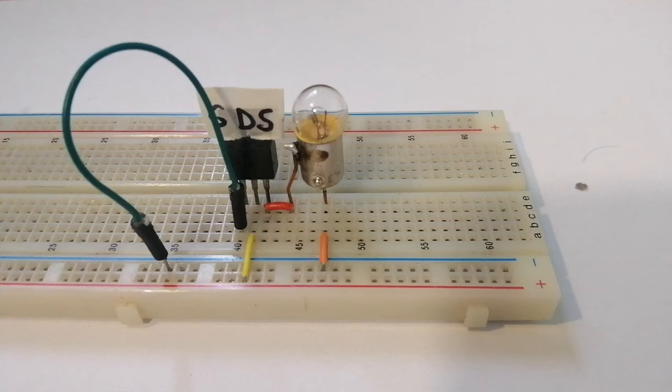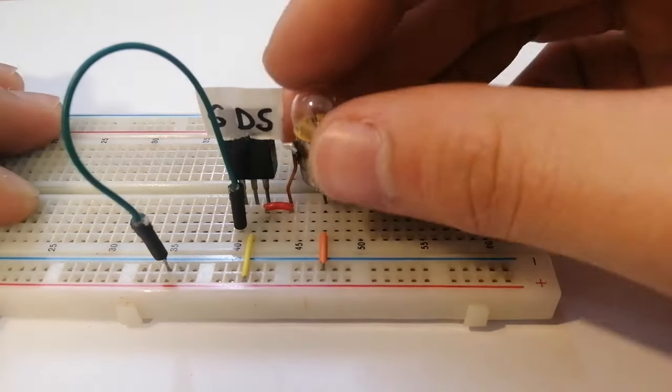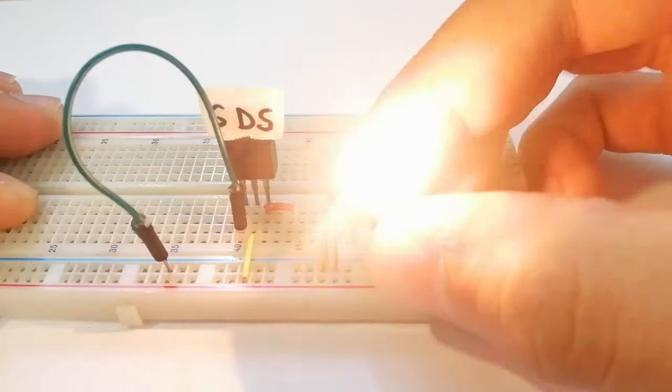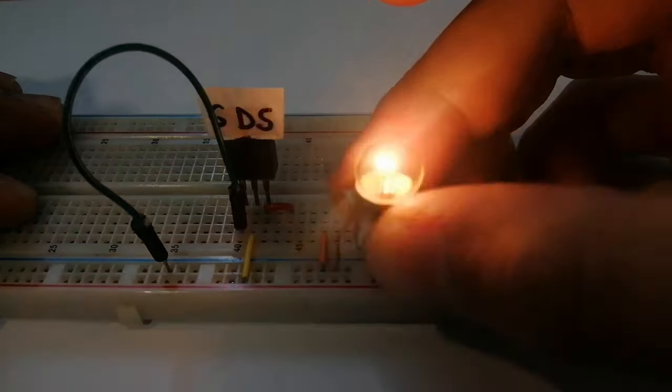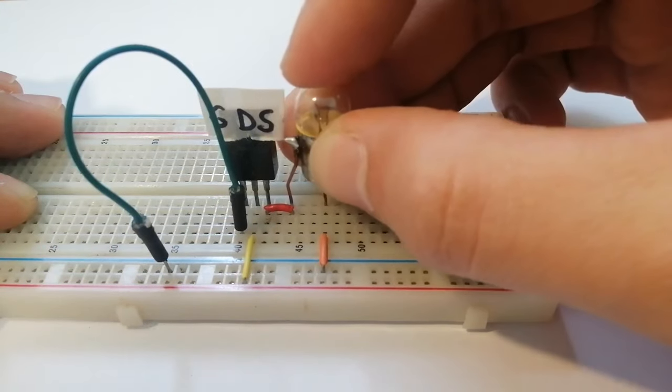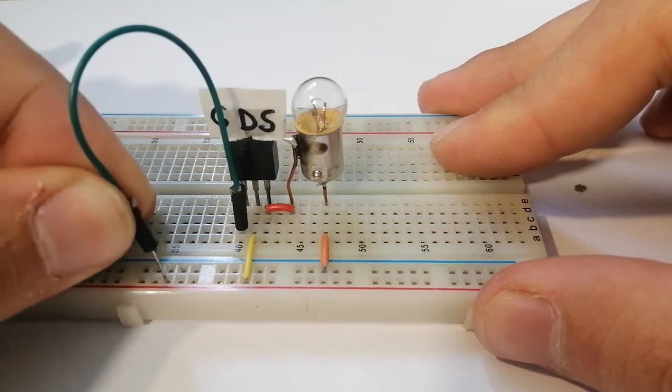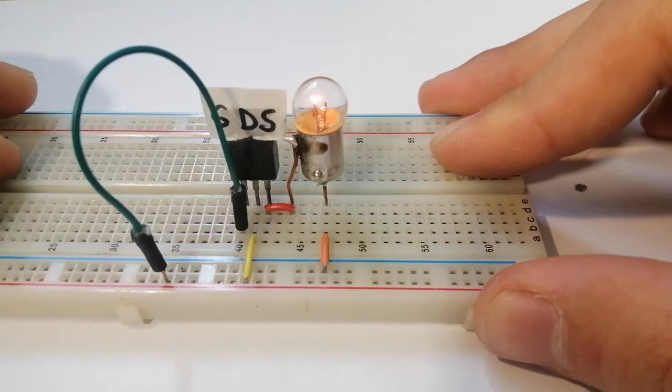This way we can see visually what's happening to the voltage on it. As a reference I can attach it directly to the power rails and we can see that it turns on quite brightly. Now we connect the gate to 12V and we can see that the light bulb turns on just faintly.